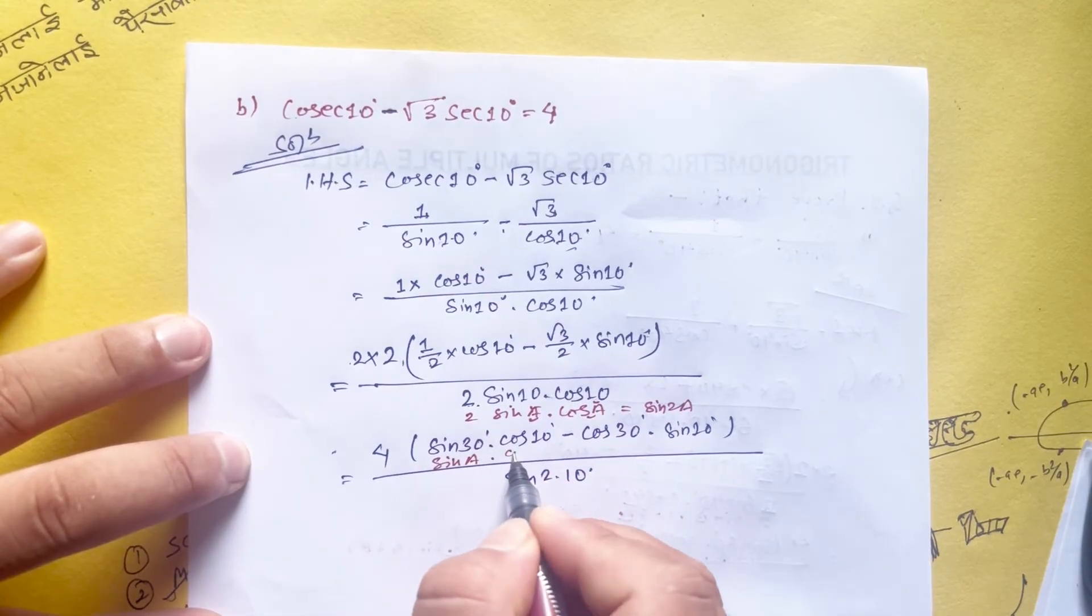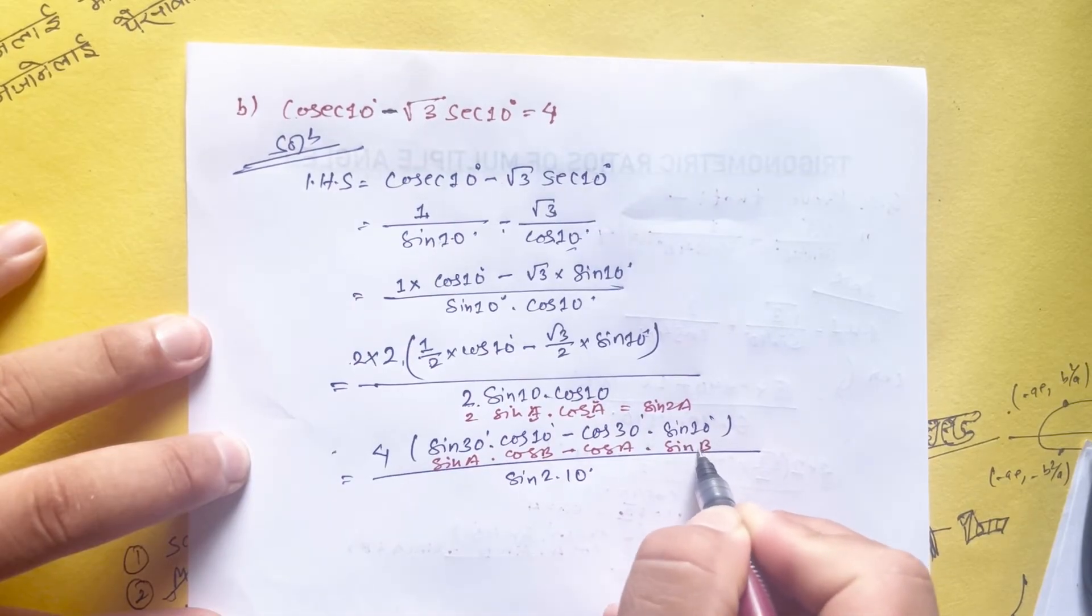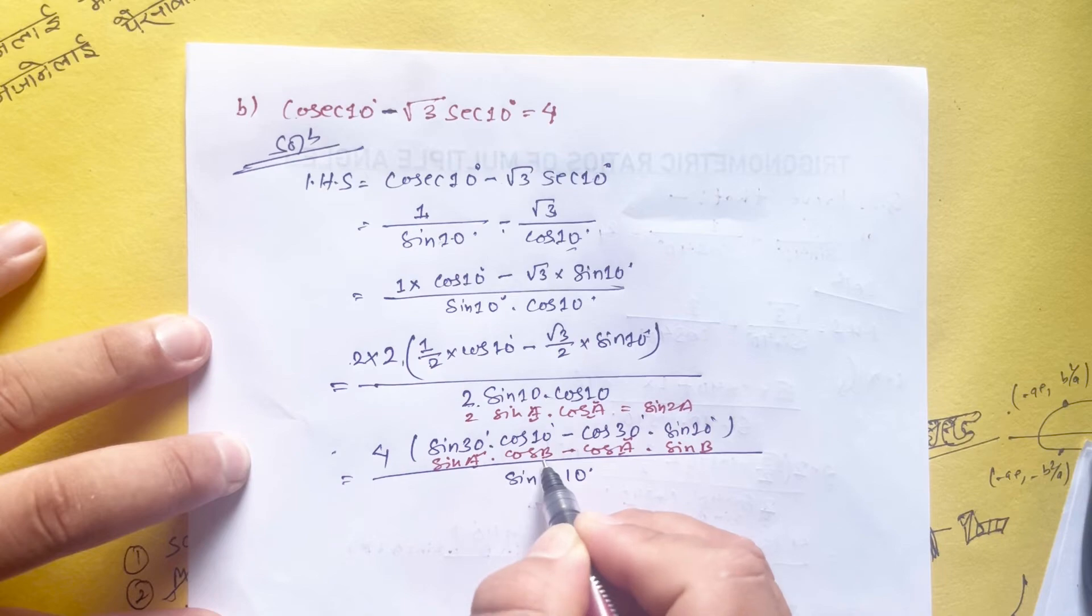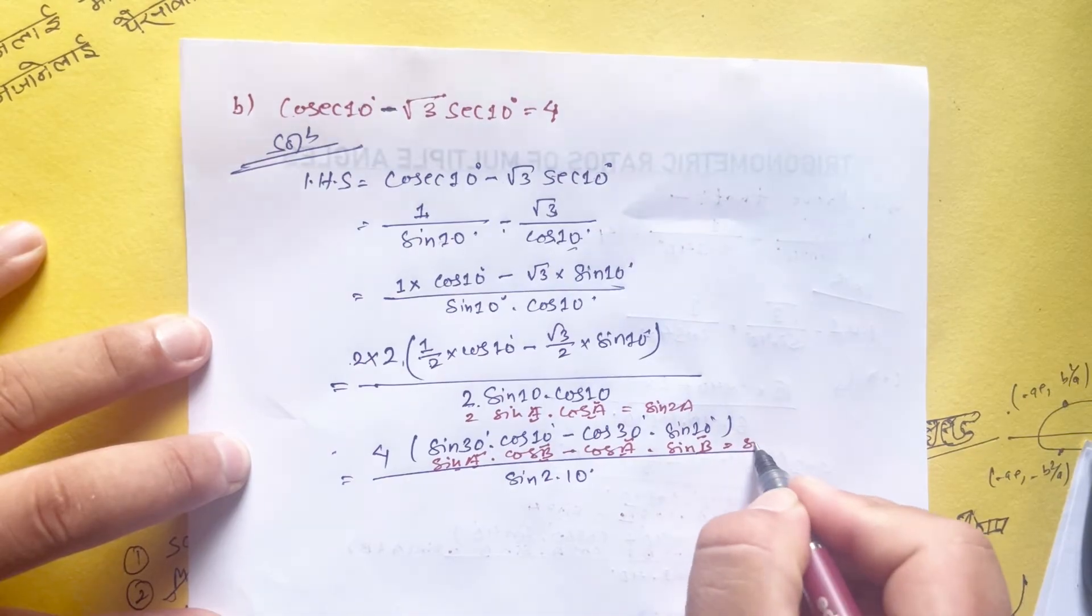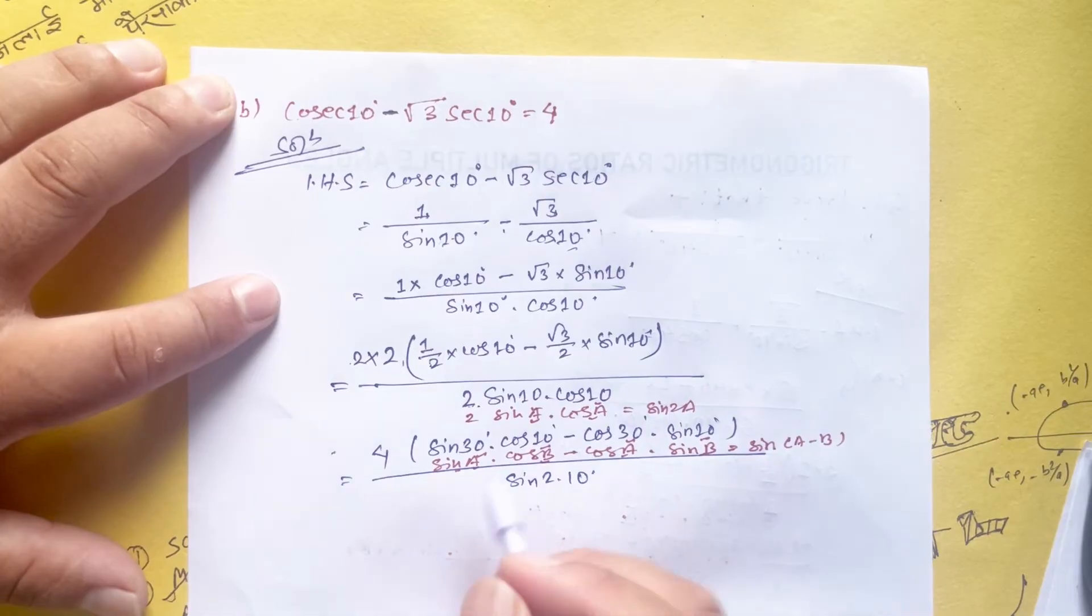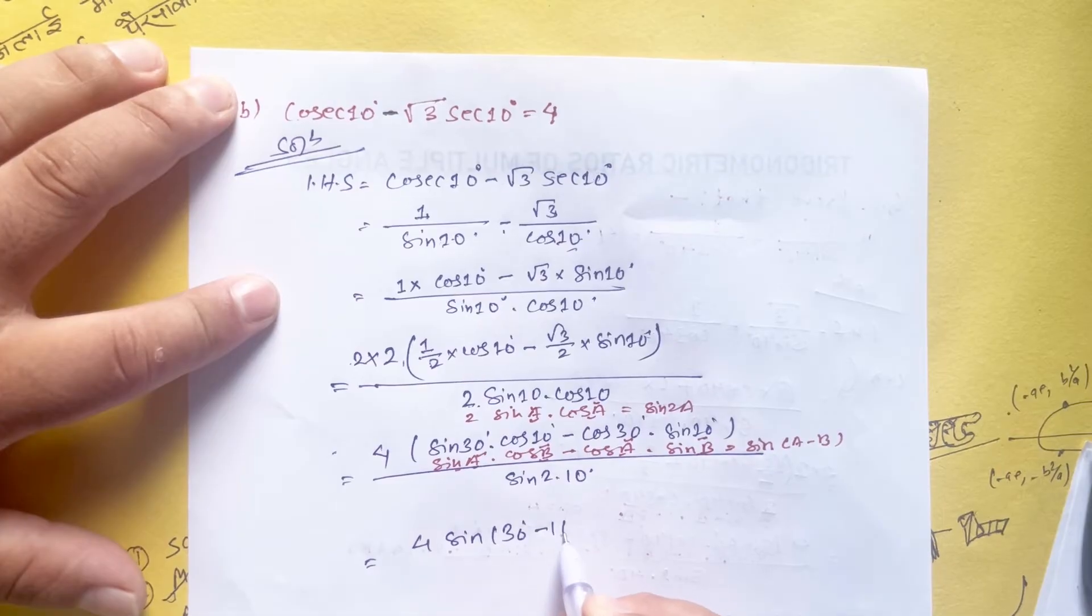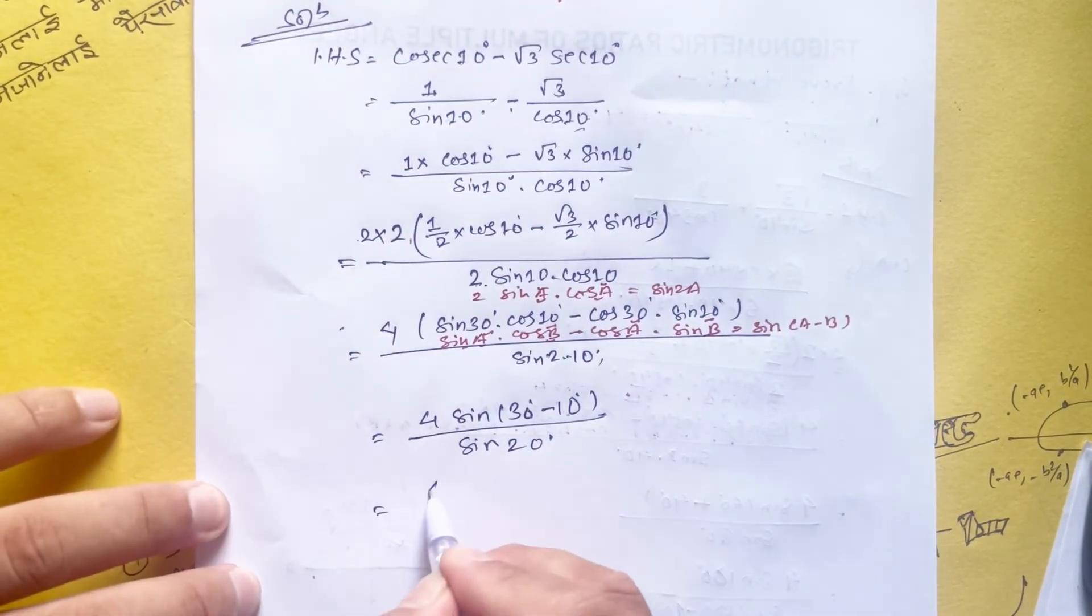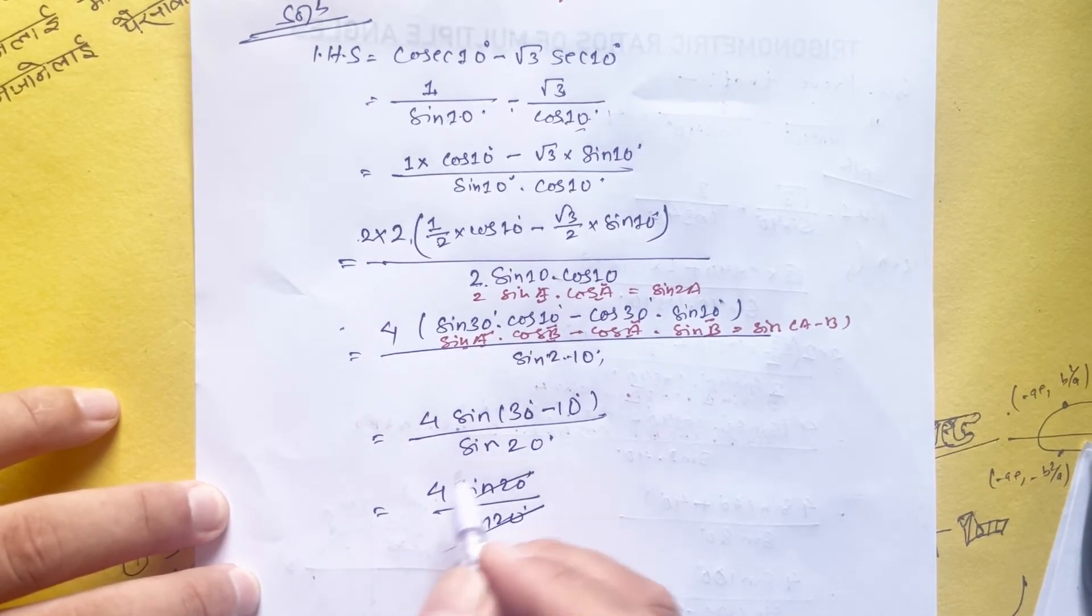Using the formula sin a cos b minus cos a sin b equals sin(a - b), where a is 30 and b is 10, we get 4 sin(30 - 10) over sin 20, which equals 4 sin 20 over sin 20. These cancel to give us 4.